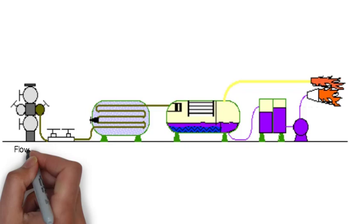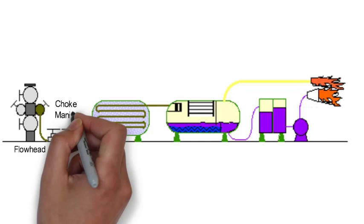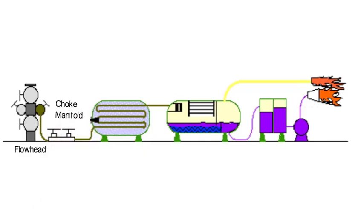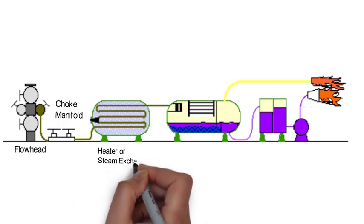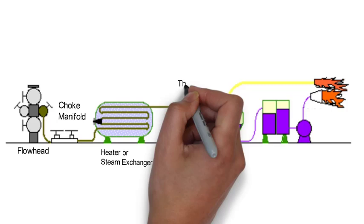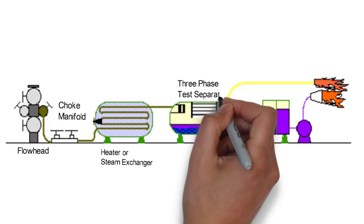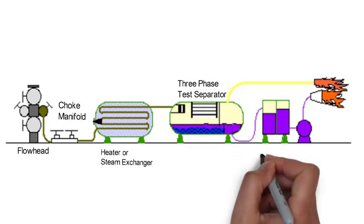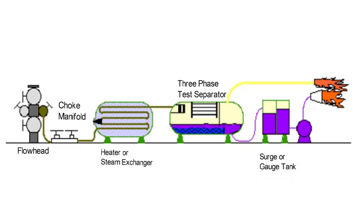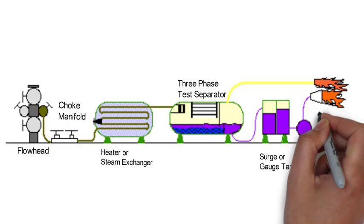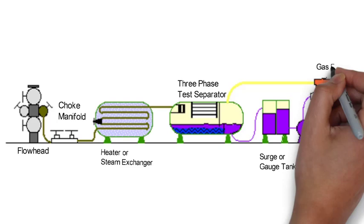Flow head. Choke manifold. Heater or steam generator. Three phase test separator. Surge or gauge tank. Pump. Oil burner. Gas flare.